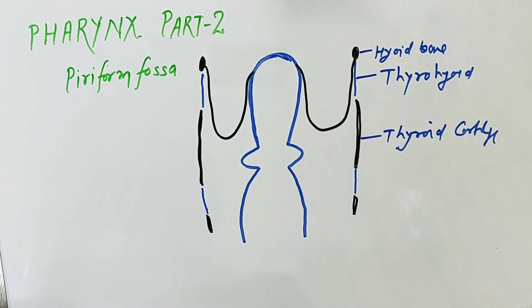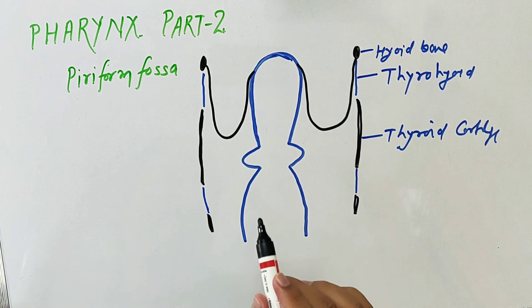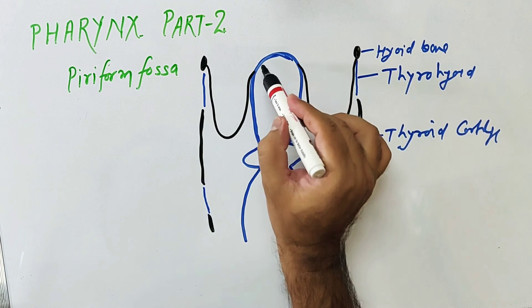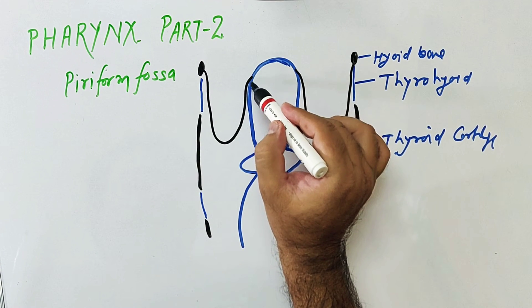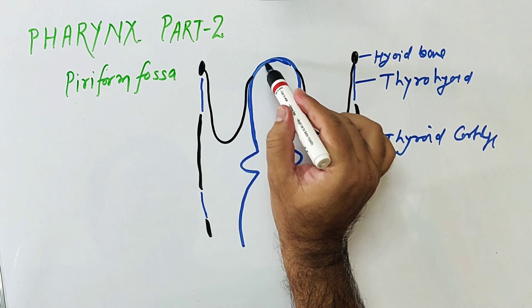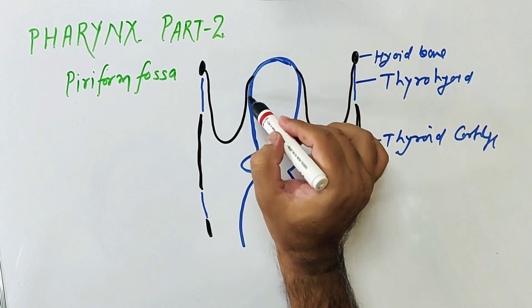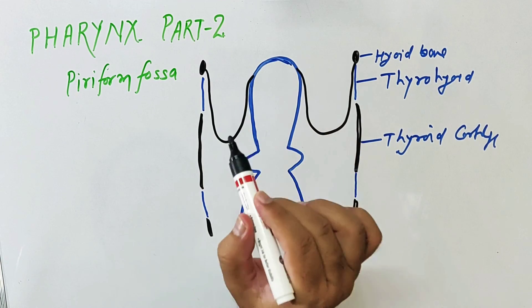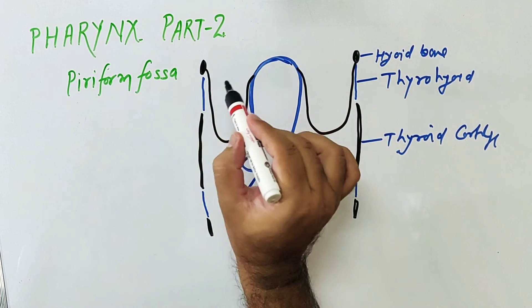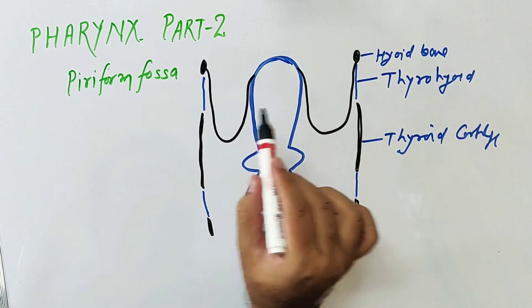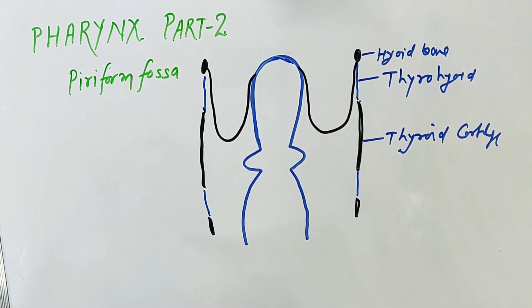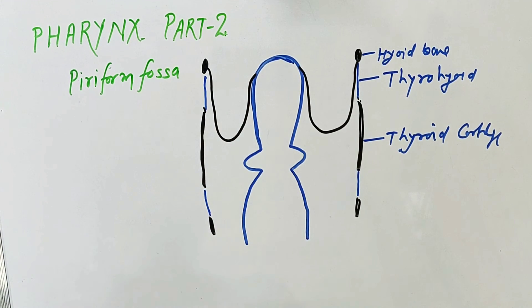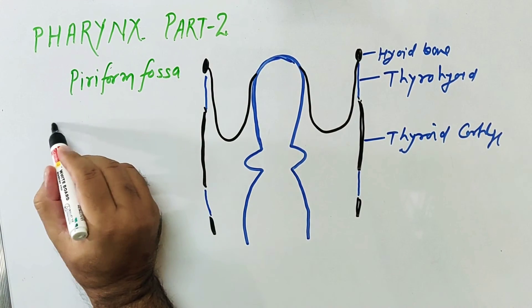This is the position of the piriform fossa. If you see the boundary of the piriform fossa: medially it is bounded by the aryepiglottic fold and quadrate membrane. Here is the epiglottis and the aryepiglottic fold and quadrate membrane medially. On the lateral side, this is the thyrohyoid membrane and thyroid cartilage. The piriform fossa is also known as the smuggler's fossa.